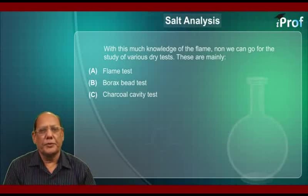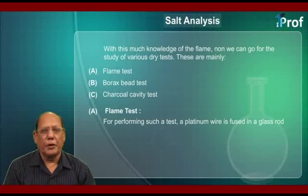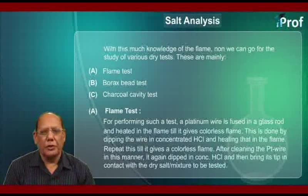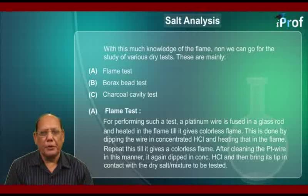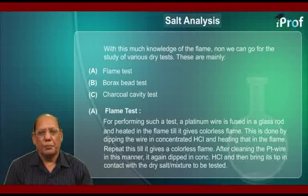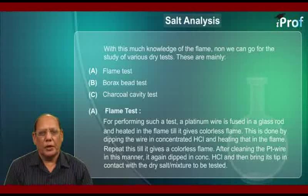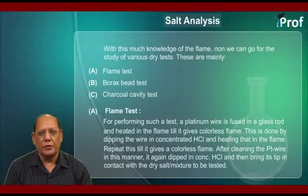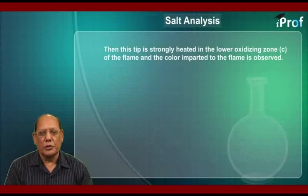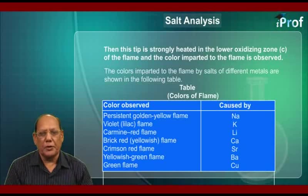For performing the flame test, a platinum wire is fused in a glass rod and heated in the flame until it gives a colorless flame. This is done by dipping the wire in concentrated hydrochloric acid and heating it in the flame. Repeat this until it gives a colorless flame. After cleaning the platinum wire, it is again dipped in concentrated HCl and its tip brought into contact with the dry salt or mixture to be tested. The tip is then strongly heated in the lower oxidizing zone C of the flame and the color imparted to the flame is observed.